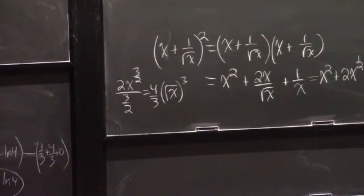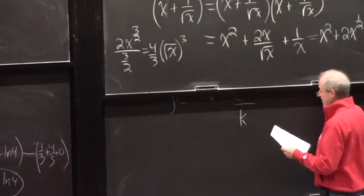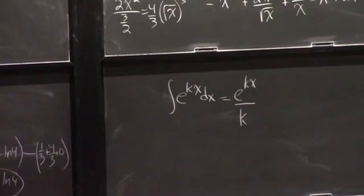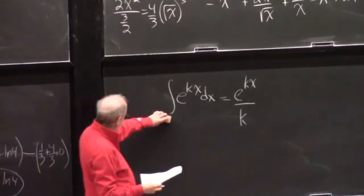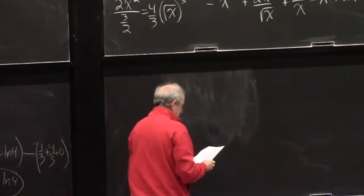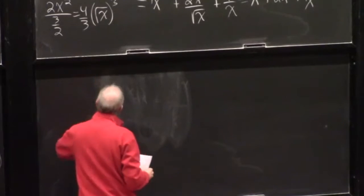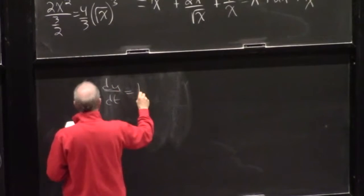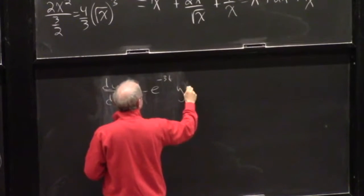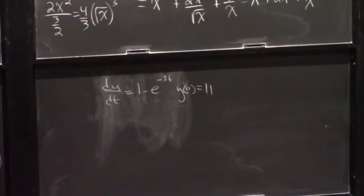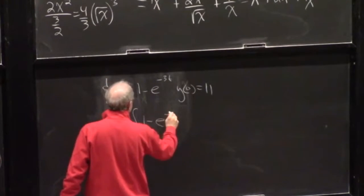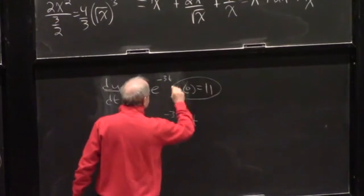There was another thing we had questions on. The growth model for an app is given by dy/dt = 1 minus e to the minus 3t, with y(0) = 11. Find the total number of apps downloaded. If you're given a derivative and want to find the total, you're going to integrate, so integrate (1 minus e to the minus 3t) dt, and the initial condition will help find the constant.